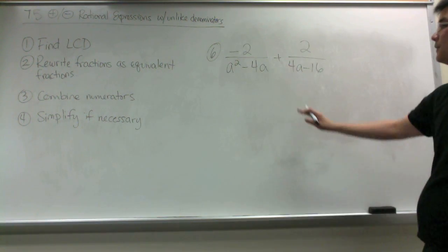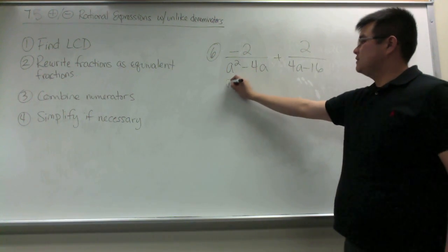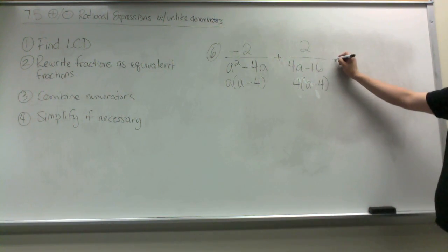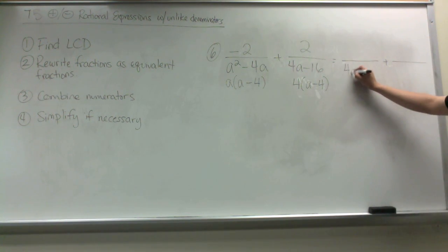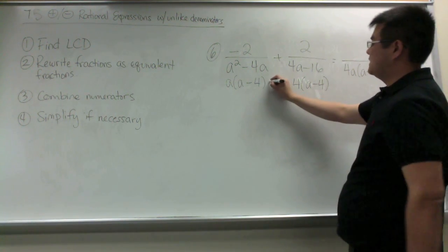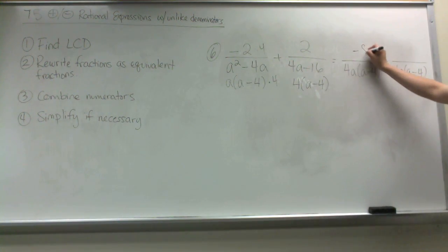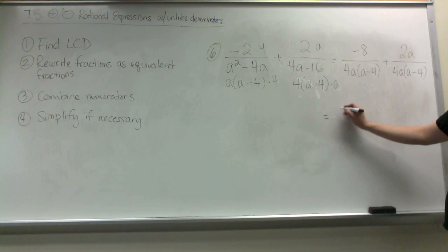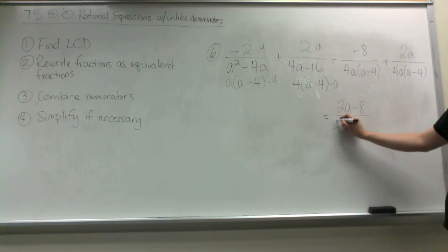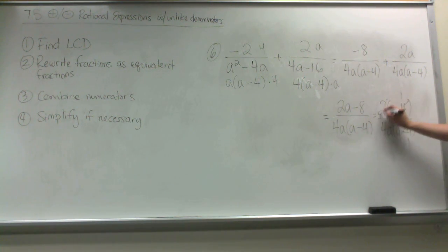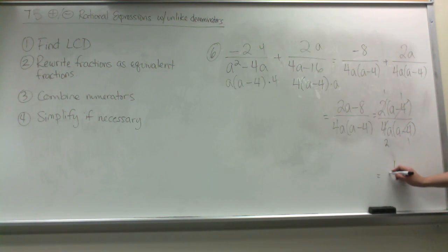In our next example, to find the LCD we factor the denominator — factoring out an a from one, and factoring out a 4 from the other. The LCD for these two fractions is 4a times (a minus 4). We multiply this denominator by 4 to get the LCD, so negative 2 times 4 is negative 8. Then we multiply by a to get the LCD, so the numerator becomes 2a. Combining numerators gives 2a minus 8 over the common denominator. We factor out a 2, and in this example we can simplify — (a minus 4) divides out, and 2 goes into 4 two times. So my final answer is 1 over 2a.